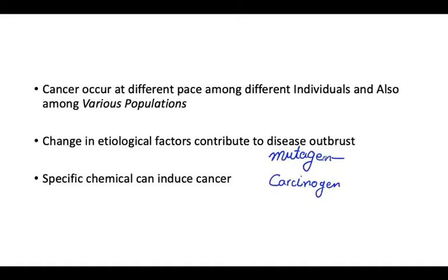What is the carcinogen and what is the mutagen? A mutagen induces mutations in DNA, and any DNA mutation can provoke carcinogenesis. If carcinogenesis produces mutation, then whatever the mutagen is, they are inducing the mutation and this is leading to cancer.